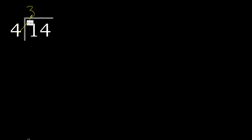Multiply by 3 is 12. It is not greater. Subtract: 14 minus 12 is 2. There is no number, therefore complete — always complete with 0. Point, 0, point. 20.